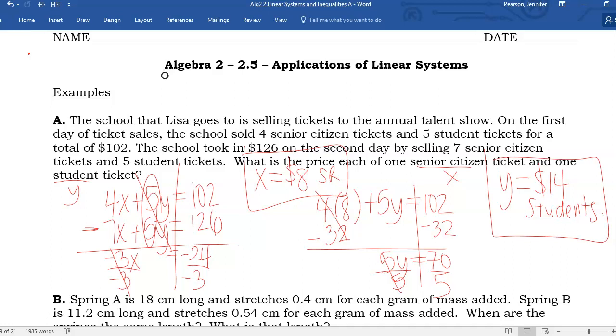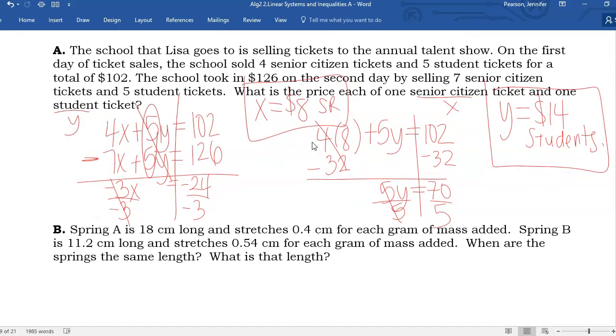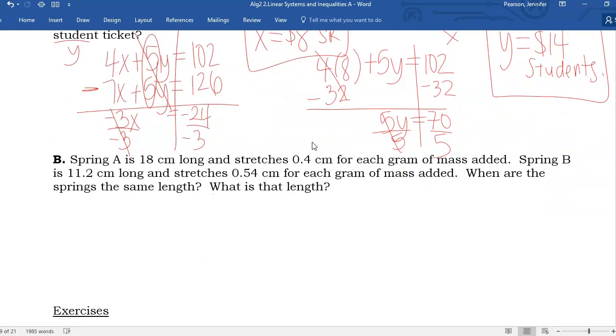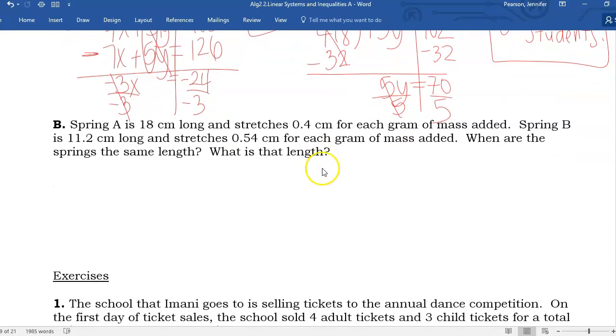Another example, example B. Spring A is 18 centimeters long and stretches 0.4 centimeters for each gram of mass added. Spring B is 11.2 centimeters long and stretches 0.54 centimeters for each gram of mass added. When are the springs the same length, and what is that length?